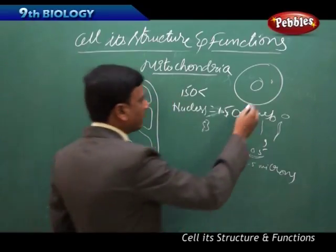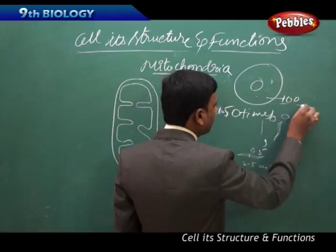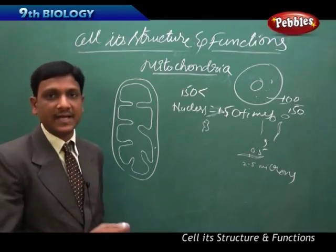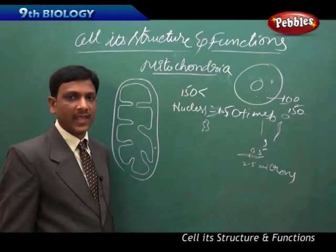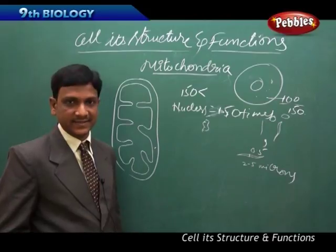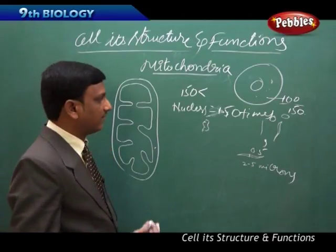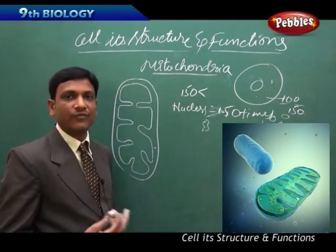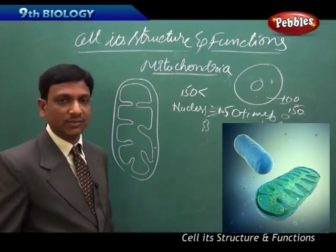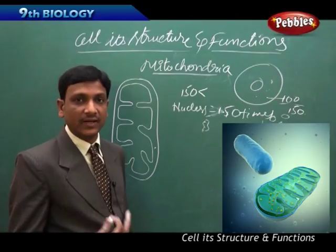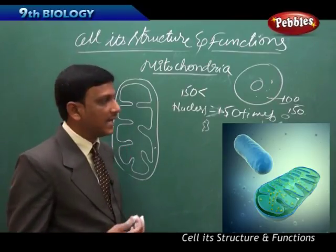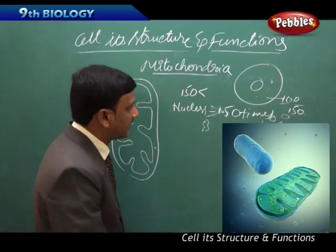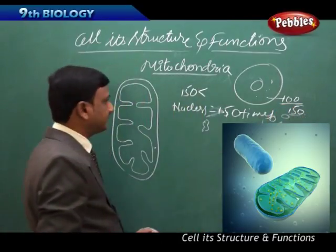The number of mitochondria found in a cell is generally around 100 to 150, but this depends upon the type of cell. Some cells that produce large amounts of energy — for example, leg and hand muscle cells when we are running — need a lot of energy, so those cells have more mitochondria. Their number varies between different cell types, but in general there are around 100 to 150 mitochondria inside a cell.